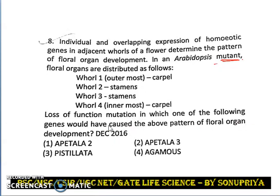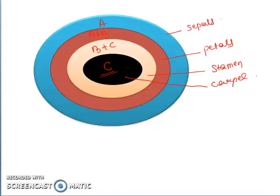From the previous two videos, we discussed around six to seven questions, and we can see that questions are most frequently asked from the mutant part of the ABC flower model. So we have to be specific and practice questions related to mutants. Now let us see what is happening in this scenario. Through this question, we are getting carpel, stamen, stamen, and carpel.